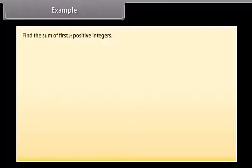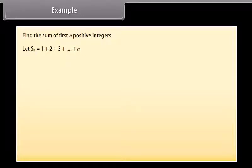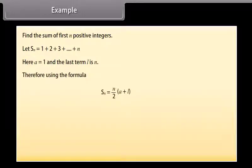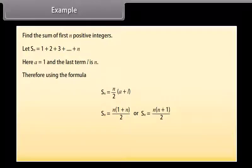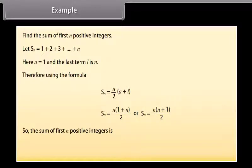Find the sum of first n positive integers. Let S(n) = 1 + 2 + 3 + ... + n. Here a = 1 and the last term l = n. Therefore, using the formula S(n) = n/2 × (a + l), we get S(n) = n × (1 + n) / 2. So the sum of the first n positive integers is S(n) = n(n+1)/2.